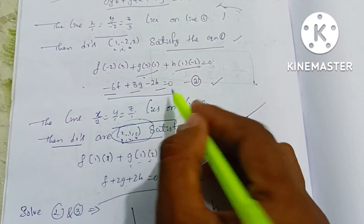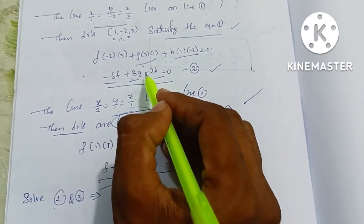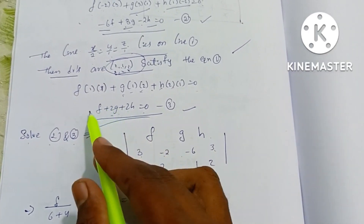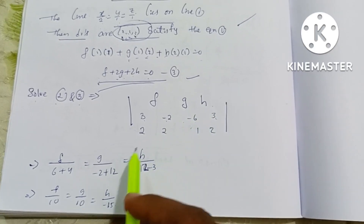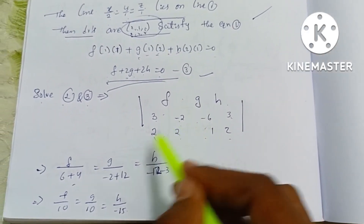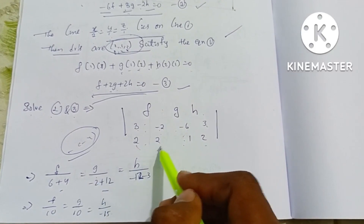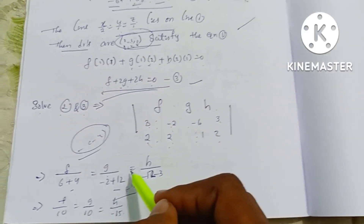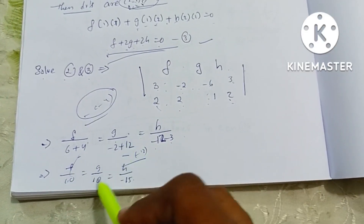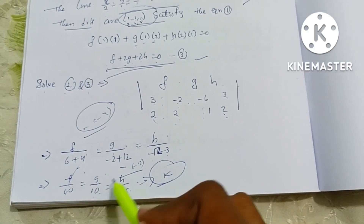Now we solve Equations 2 and 3. Equation 2 has coefficients −6, 3, −2 and Equation 3 has coefficients 1, 2, 2. Using cross-multiplication: f/[(3)(2) − (−2)(2)] = g/[(−2)(1) − (−6)(2)] = h/[(−6)(2) − (3)(1)], giving f/10 = g/10 = h/−15.